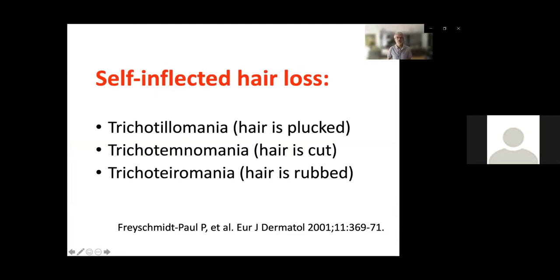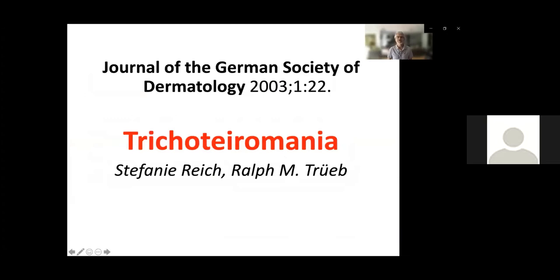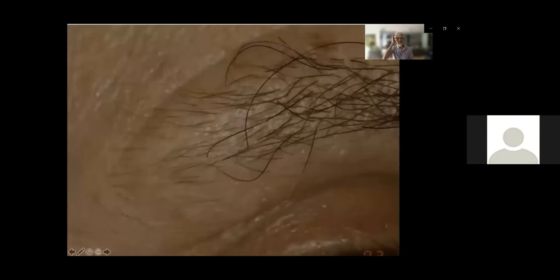Pierre Freischmuth-Paul was the first to publish trichoteromania in the British Journal of Dermatology in 2001, and then the group of Ralph Trepp from Switzerland published the second case in 2003. We have seen a patient with eyebrow trichoteromania, and we cooperated with a psychiatrist on managing prognosis depending on the underlying mental disorder. Under the scanning electron microscope, we found trichoptylosis — the open ends of hair, so characteristic of this condition.